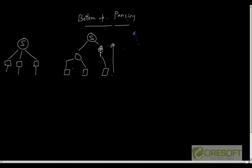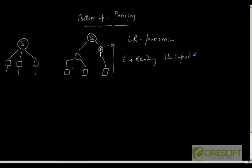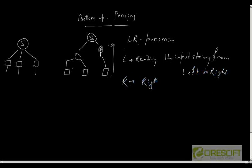Bottom-up parsing is also called an LR parser. LR parser means: L stands for reading the input string from left to right, and R means applying the rightmost derivation in reverse. So bottom-up parsers are also called LR parsers.